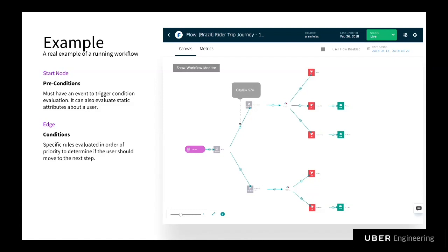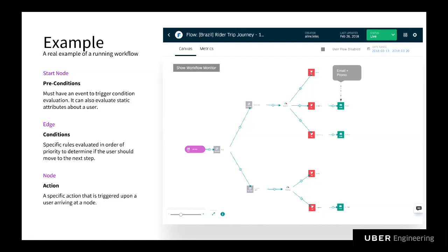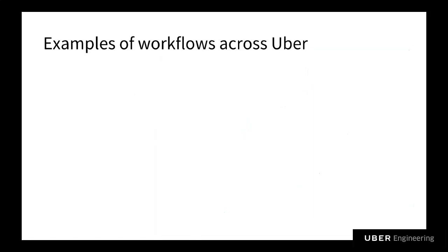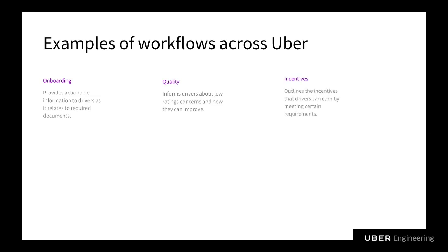The last part of a workflow is a node. Nodes have actions, and these actions are triggered immediately upon the user arriving at the node. There are a ton of different nodes in our system. The first is an experiment node, which segments users into different groups for testing. The second is an email node — in this particular campaign, if the rider made it to this node, they would get the email with the promotion. There are many other examples of teams across Uber using Flow to automate business process: for onboarding, sending actionable information to drivers about required documents; for quality, informing drivers about low rating concerns; outlining driver incentives, city engagement, safety, and encouraging riders to take advantage of expiring promotions.